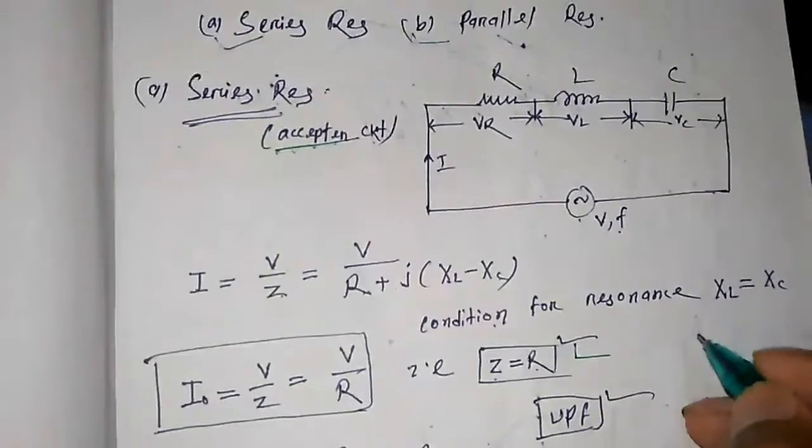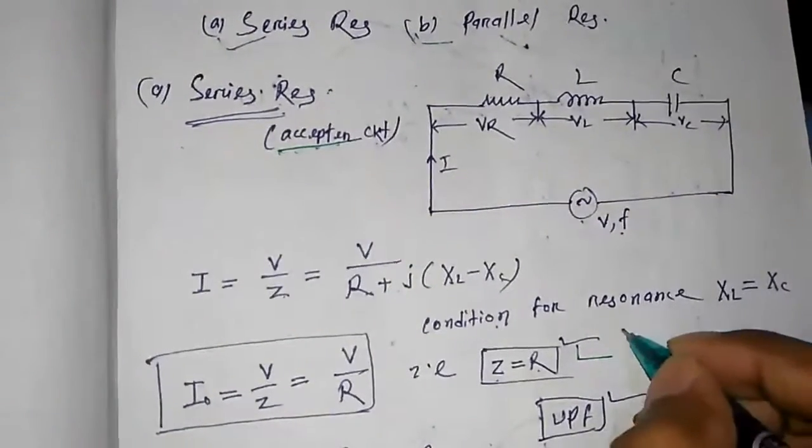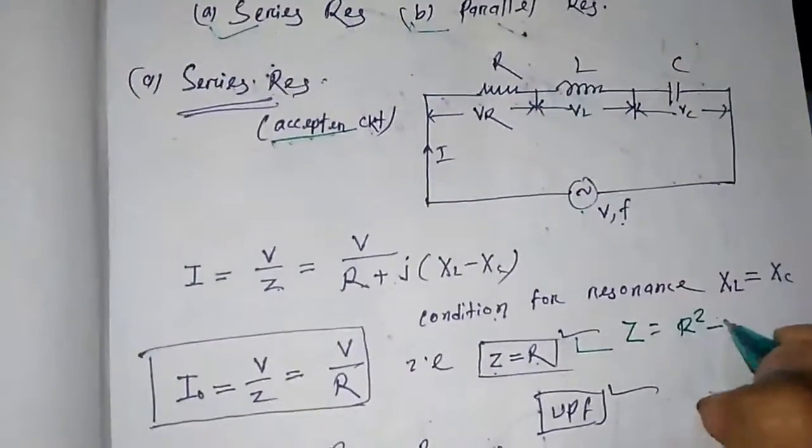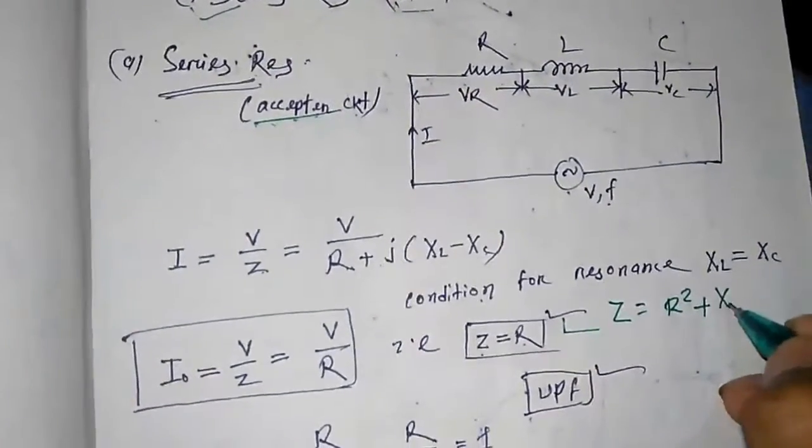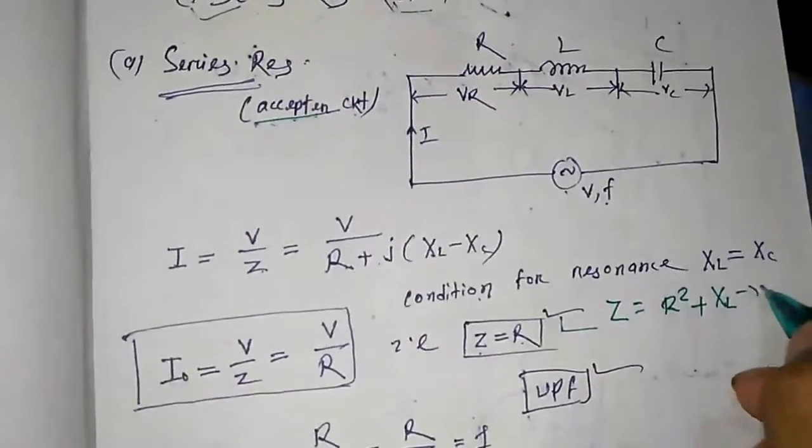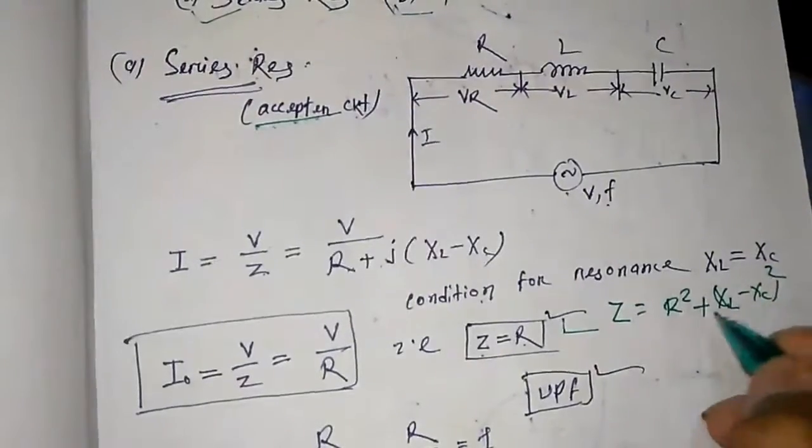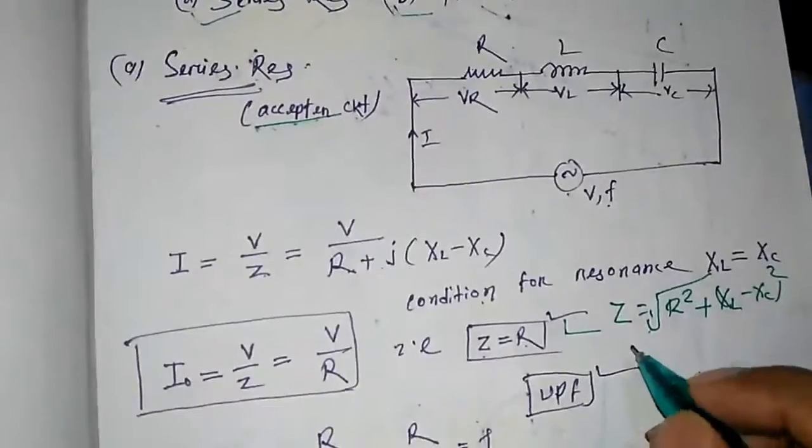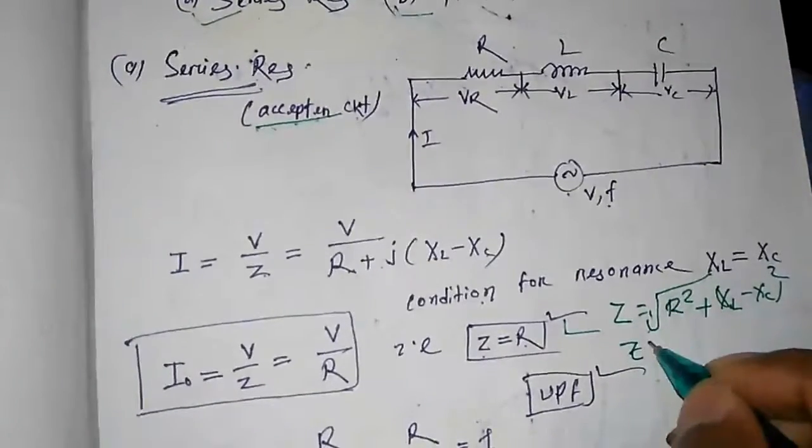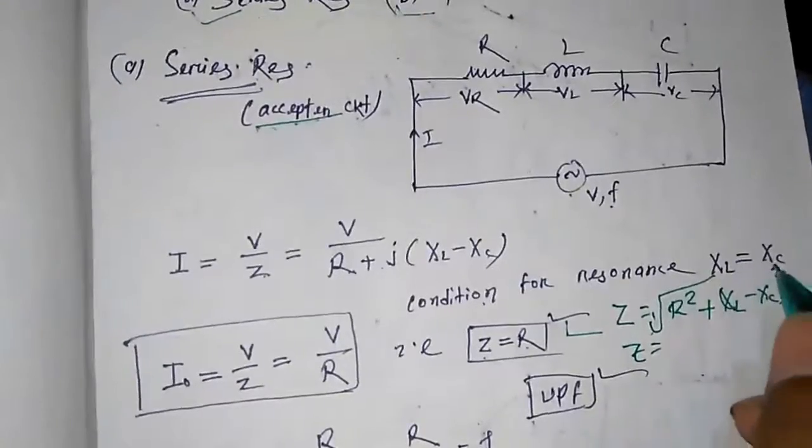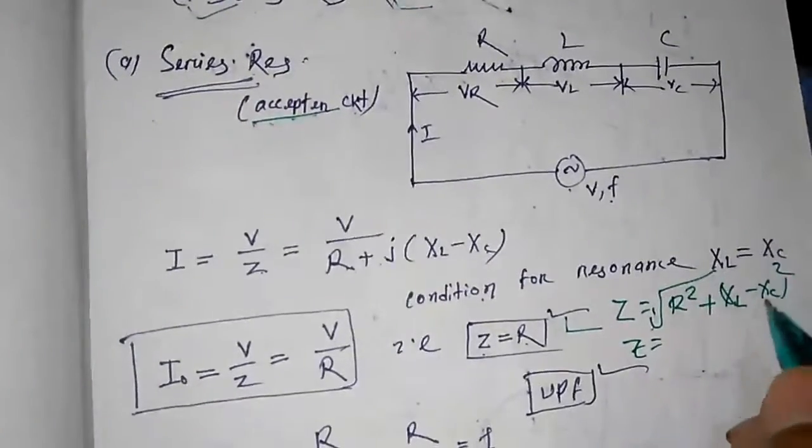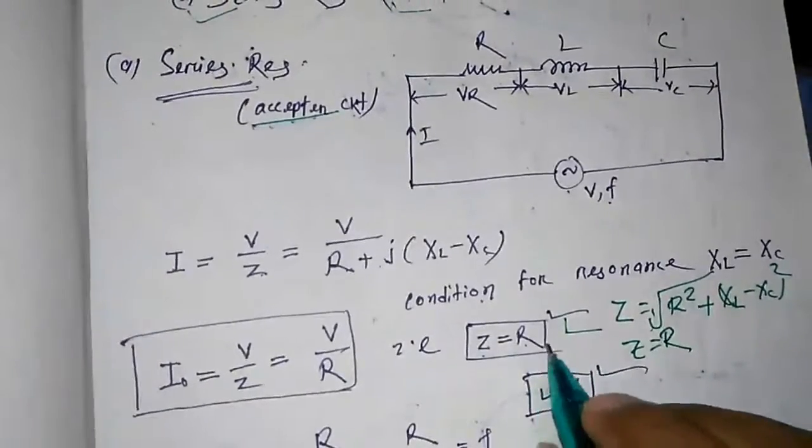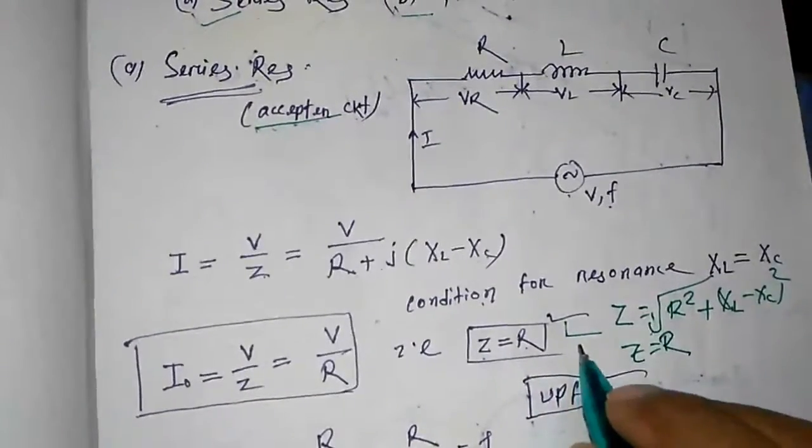What is Z? Z is nothing but Z equal to square root of R squared plus (XL minus XC) squared. So this Z equal to root over of R squared, this term will be zero. So Z equal to R. This is the condition for resonance in case of a series resonance.